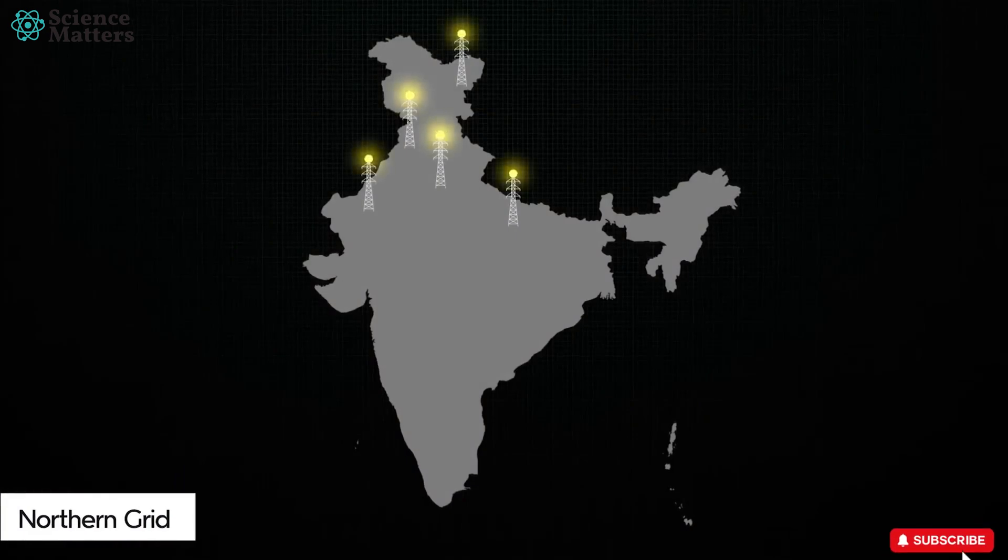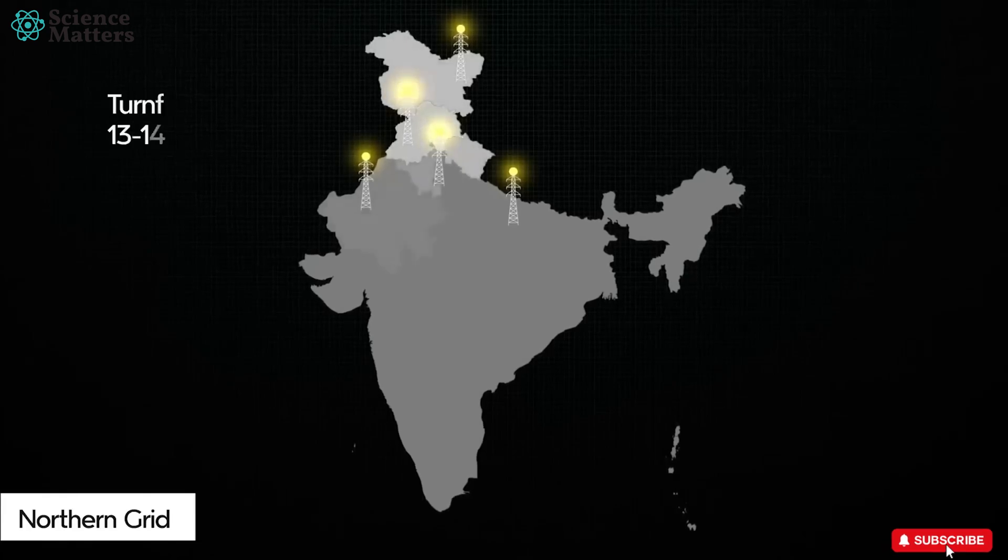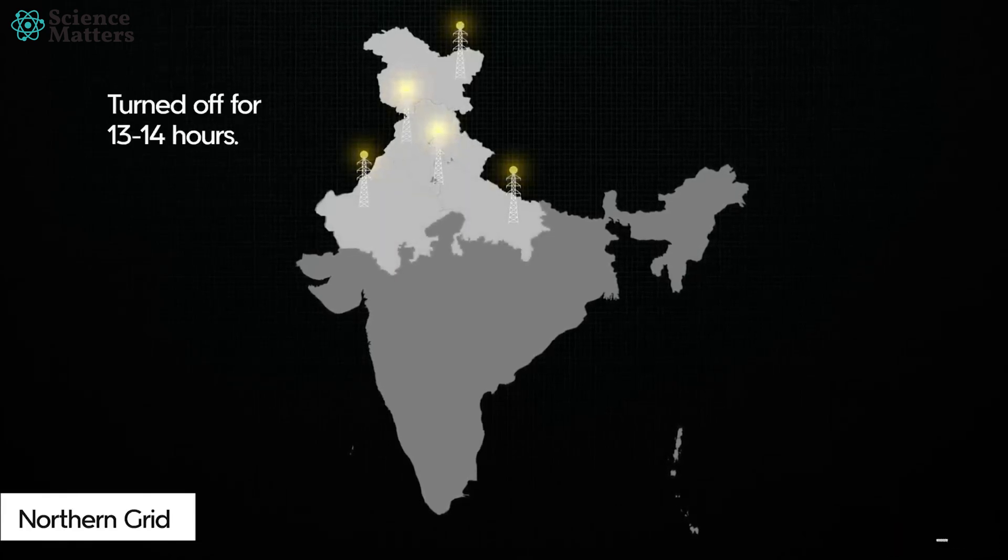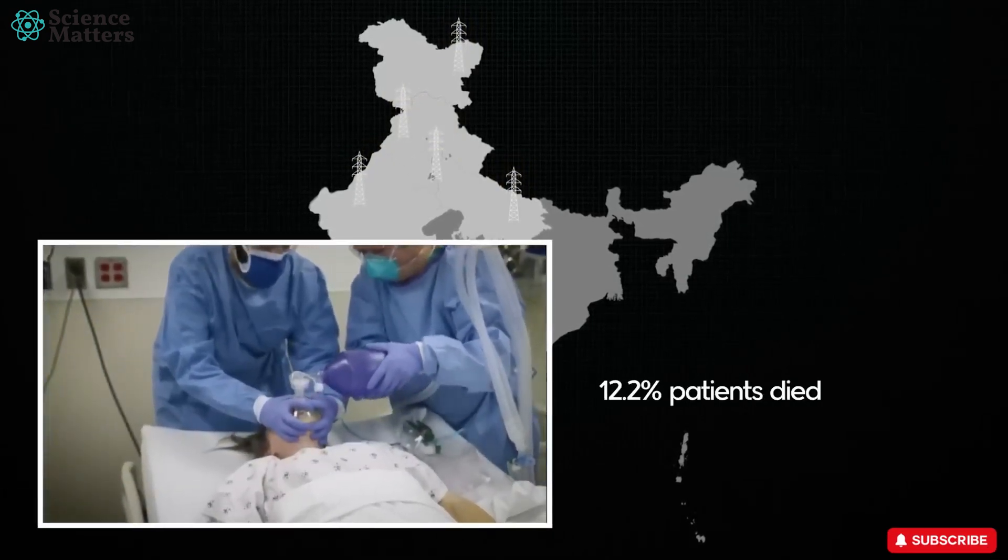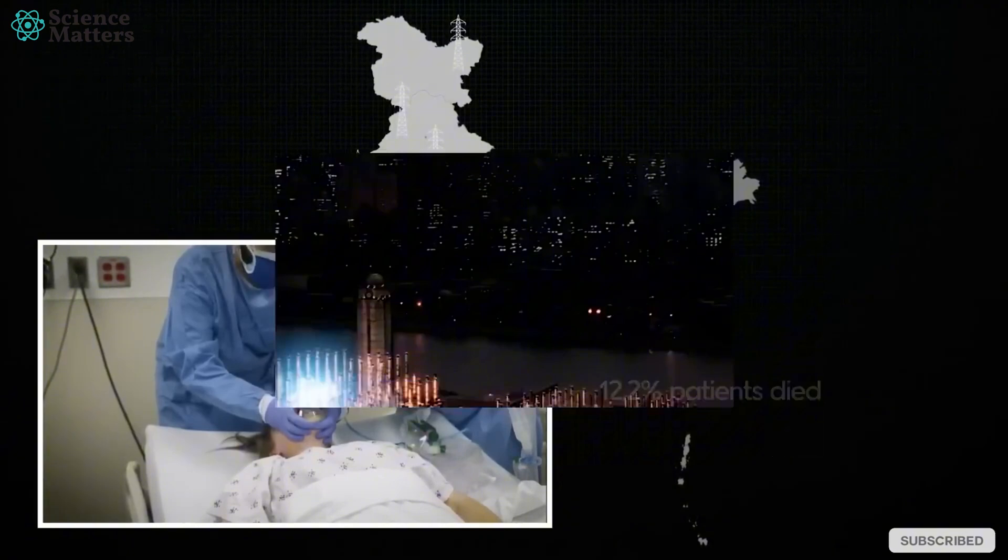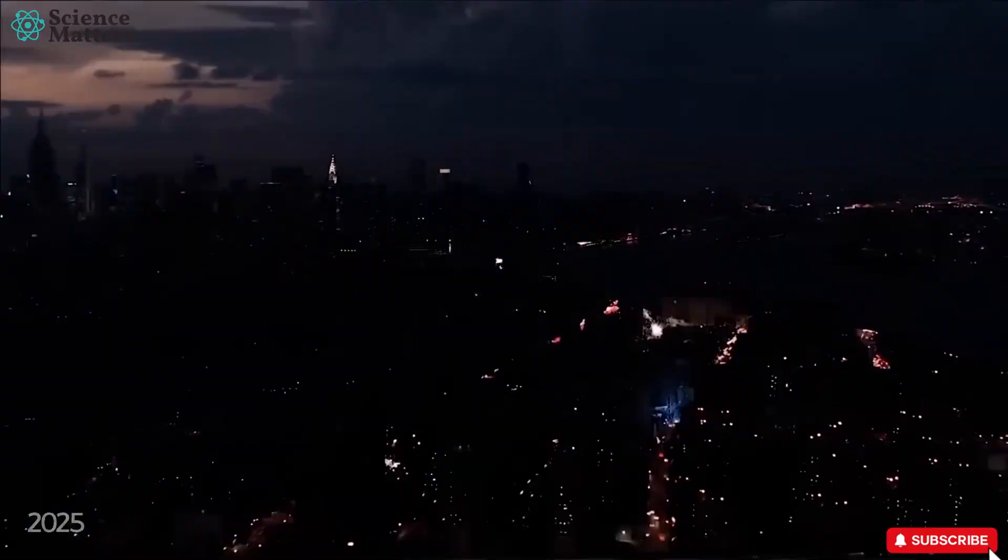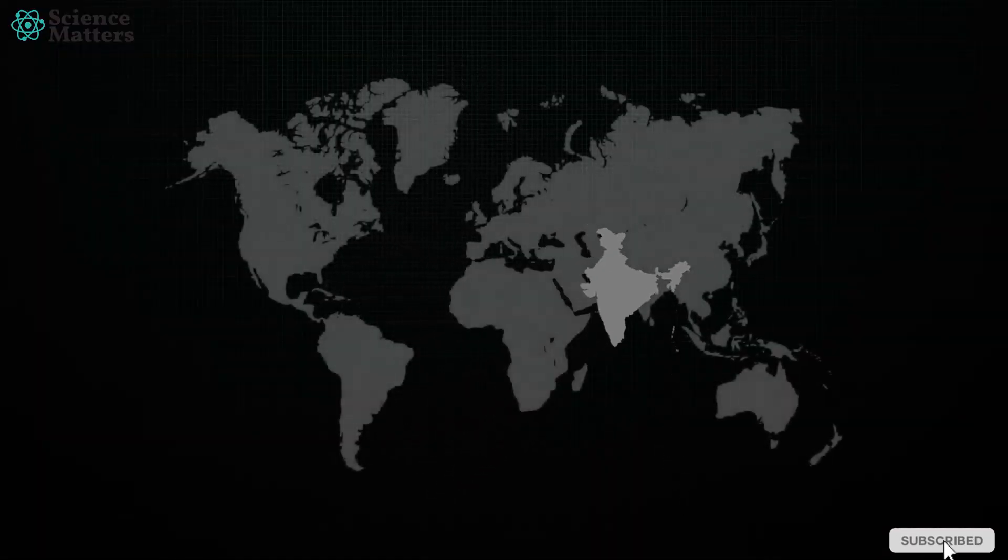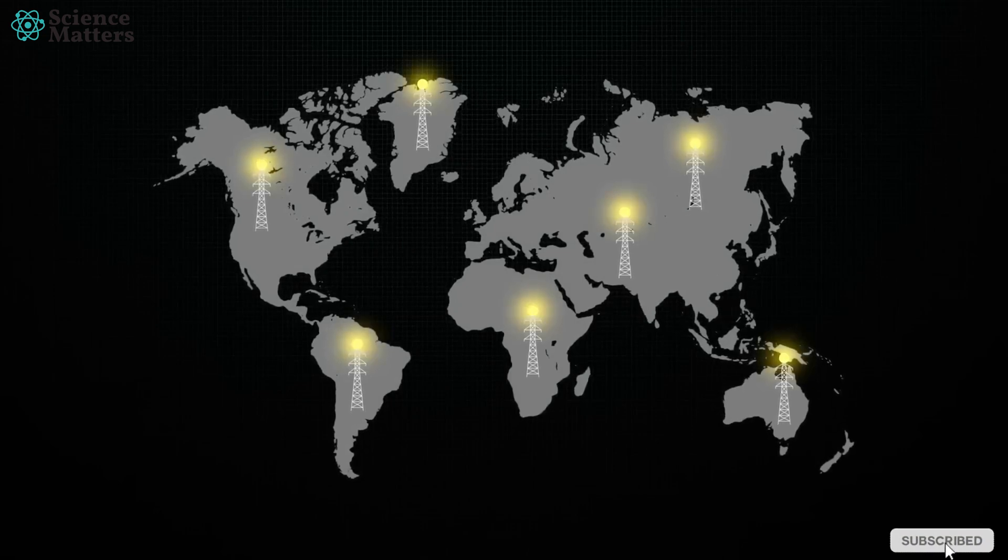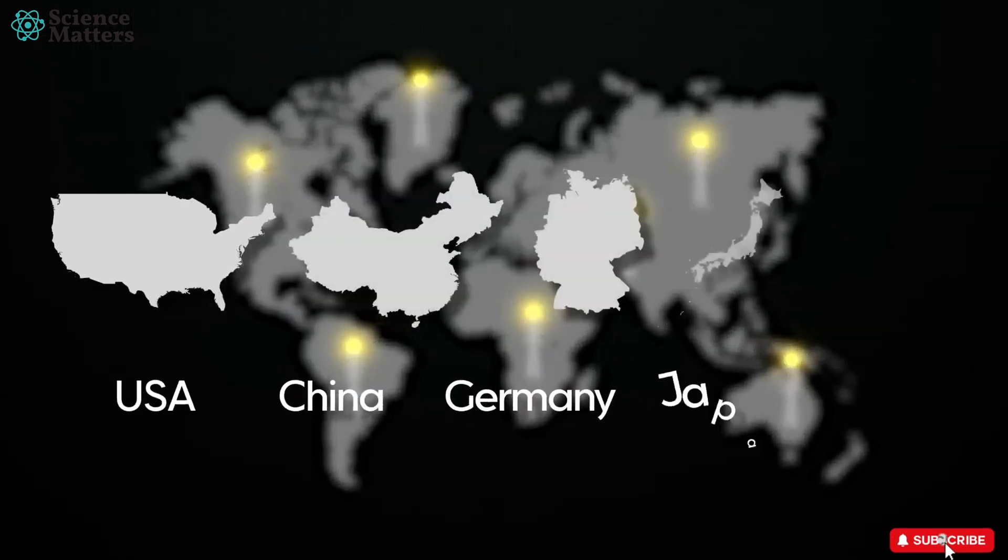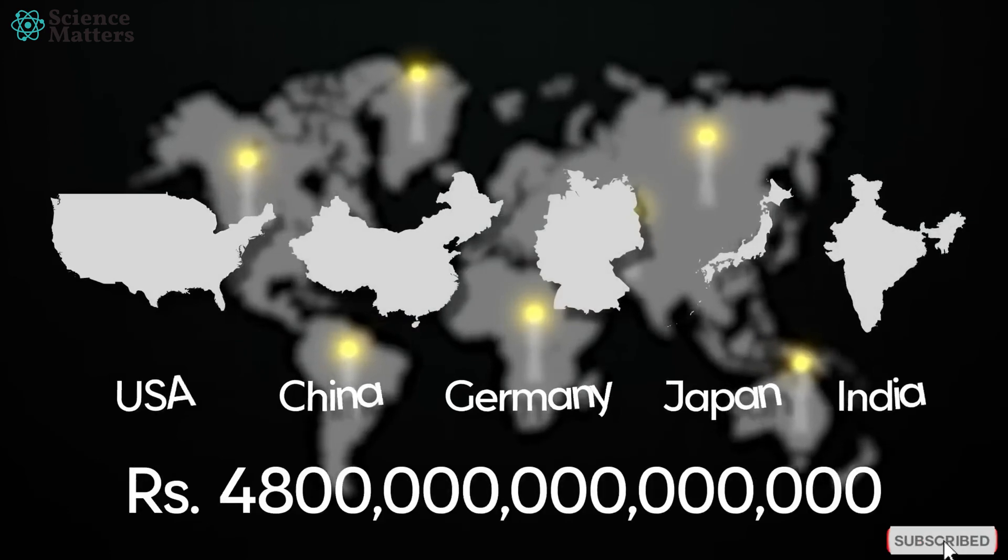When the Northern Grid, the highest voltage electricity transmission network, failed for 13 to 14 hours, it caused the immediate death of 12.2% of hospital patients. The 2025 outage could last over a month. This will cause the biggest loss to the global GDP, as every aspect of life relies on electricity. The top 5 countries alone have a combined GDP of 48 trillion. Now imagine the global loss.